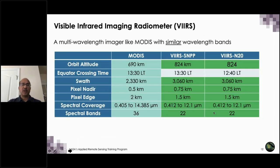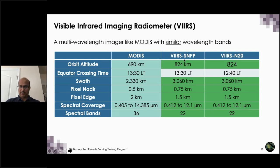Just to point out some more details on the similarities and differences between VIIRS and MODIS: both VIIRS are identical in all those aspects except for a time difference. The equatorial crossing time for VIIRS on NPP is 1:30 local time, whereas VIIRS on NOAA 20 is 12:40 local solar time. The swath resolution and everything else remains the same.